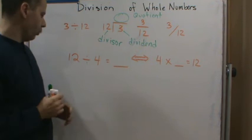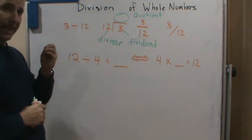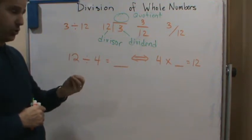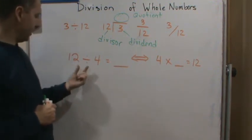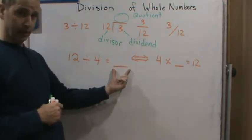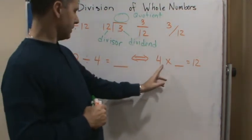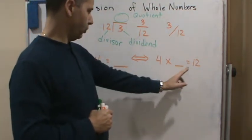Also, when we look at division, it can be looked at in terms of multiplication too. When we say 12 divided by 4 equals blank, what we mean is: 4 times what will give me 12?